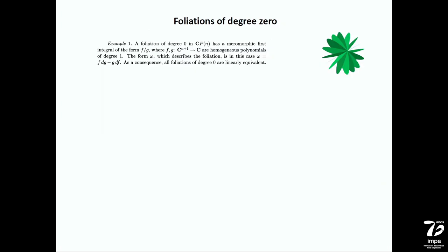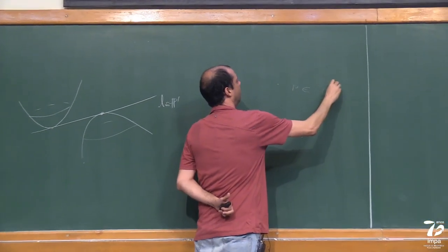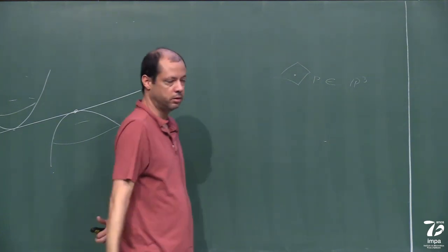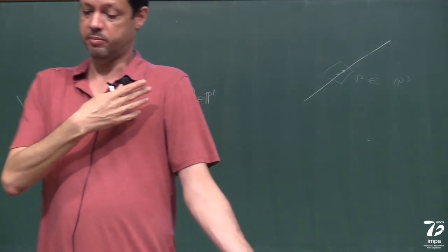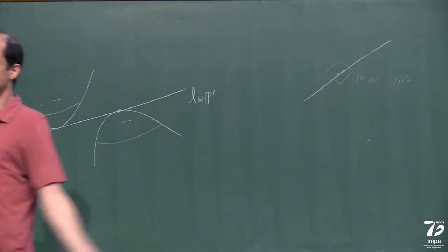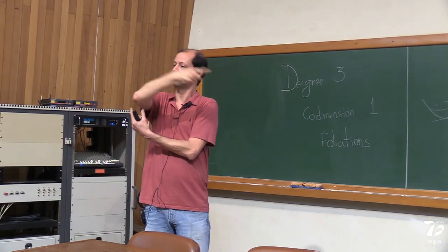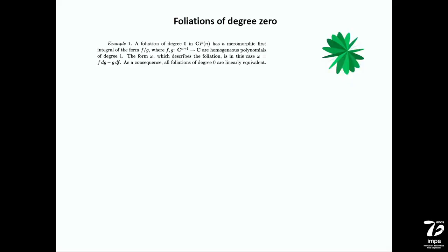There is a classification in small degrees. Degree zero is just an exercise: you can easily show that a foliation of degree zero is just a pencil of hyperplanes. Take a smooth point in P^3, take a germ of leaf passing through that point, take a tangent direction and a line tangent to that direction. By definition this line has a tangency with the foliation — but degree zero means no tangency. So the line is contained in the leaf, and the leaves must be hyperplanes. There's no other way to organize hyperplanes, and this is a very easy exercise.